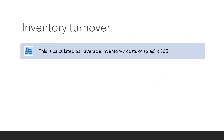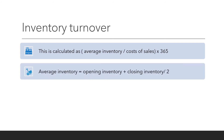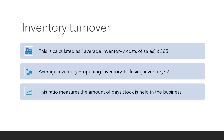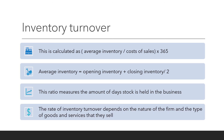Inventory turnover. This is calculated as average inventory divided by cost of sales, times by 365. Average inventory is opening inventory plus closing inventory, divided by 2. This ratio measures the number of days stock is held in the business. The rate of inventory turnover depends on the nature of the firm and the type of goods and services that they sell.